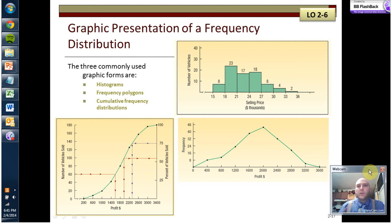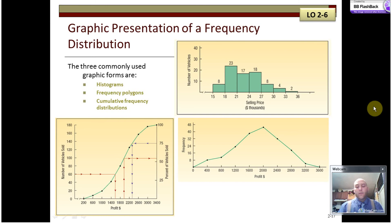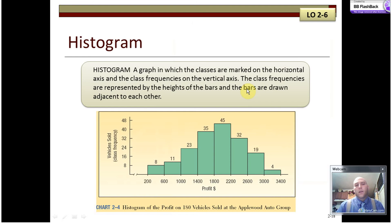Once we have our frequency distributions or our relative frequency distributions, we can display those graphically as well. We can display them not as a bar chart or as a pie chart, but as these three types of charts indicate here: histograms, frequency polygons, and cumulative frequency distributions. A histogram is a graph in which the classes are marked on the horizontal axis. Classes are marked down there. And the frequencies, again, marked on the vertical axis. The class frequencies are represented by the heights, as frequency generally is, and the bars are shown adjacent to each other.